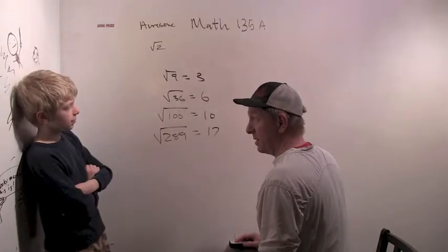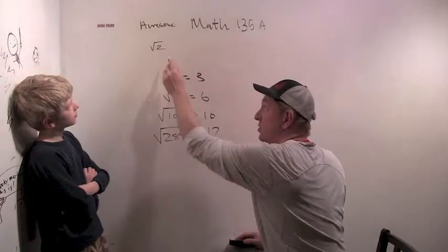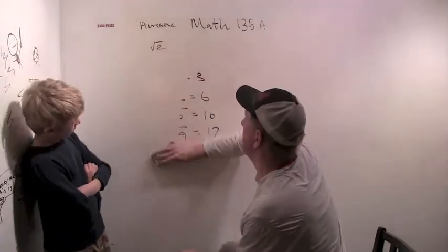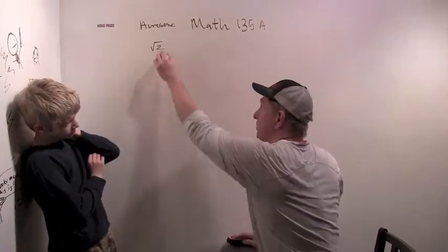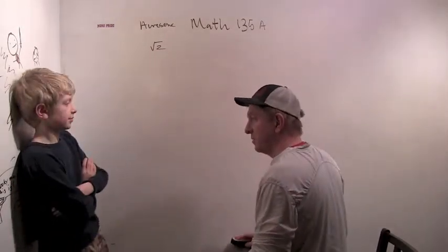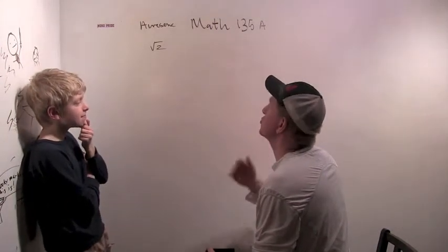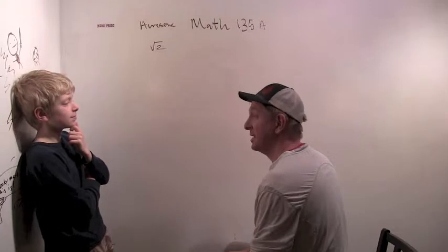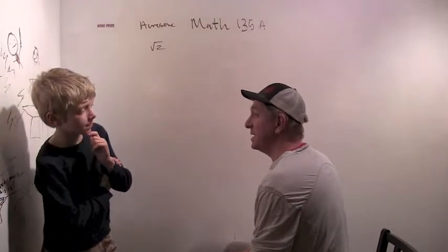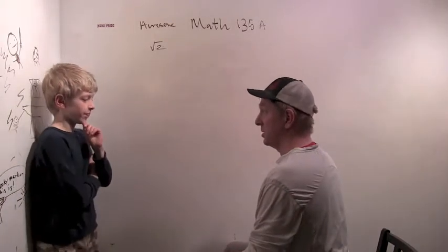But other numbers are not perfect squares. Like 2, for example, is not a perfect square. And so we're trying to understand the square root of 2. You want to put your pondering face on? What could the square root of 2 be? Is it an integer?